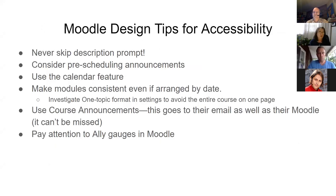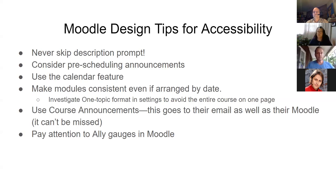Design tips for accessibility in Moodle: never skip that description prompt. Consider pre-scheduling your announcements and use the calendar feature. Make sure modules are consistent — even if arranged by date, make sure you have objectives, readings, and assignments so it's very clear for students. This is a particular issue for students on the spectrum who get used to a certain format and get very confused otherwise. Remember, just like some of you have children or pets in the background, your students are going to be experiencing that too. We found that some students are sharing a computer with everyone in their household and only have a certain amount of time to get into learning mode.